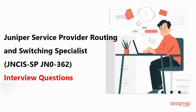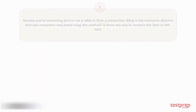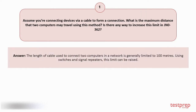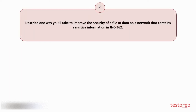Question number one: Assume you're connecting devices via a cable to form a connection. What is the maximum distance that two computers may travel using this method? Is there any way to increase this limit in JN-0362? The length of cable used to connect two computers in a network is generally limited to 100 meters. Using switches and signal repeaters, this limit can be raised.